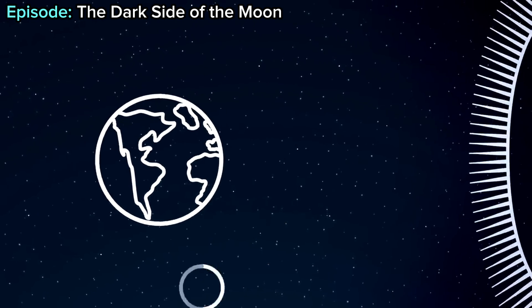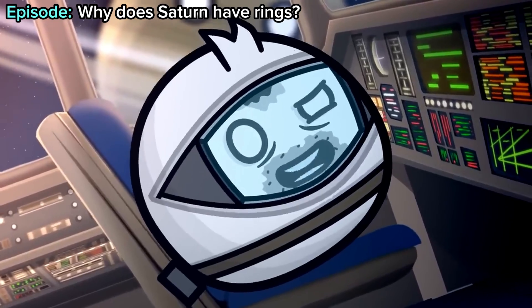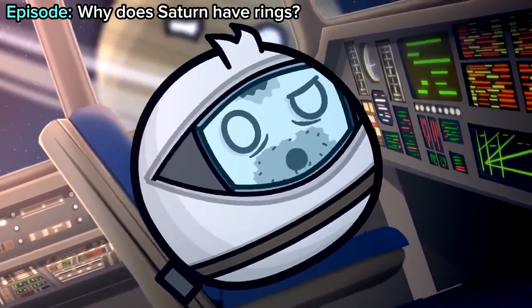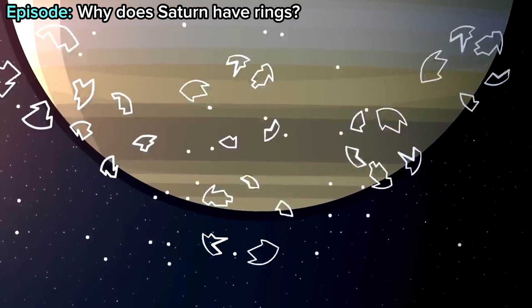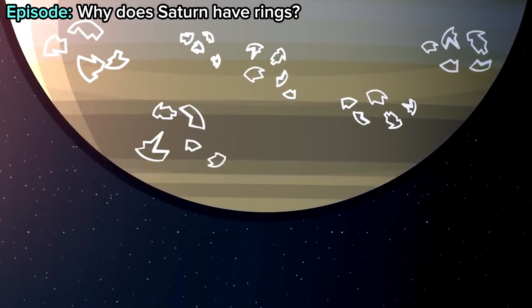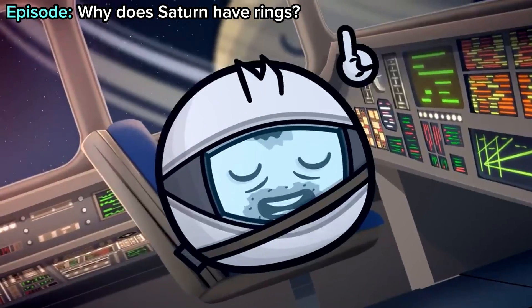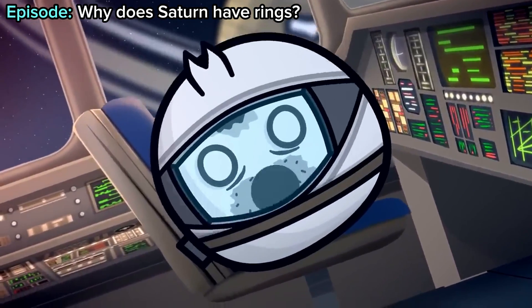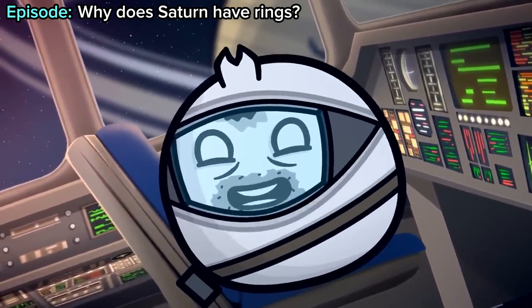Your rings may have originated from a moon that got too close to you, so close that gravity destroyed it. This moon's debris is what probably made your rings. This whole moon destruction thing may have been going on for billions of years with other moons that formed previous rings.